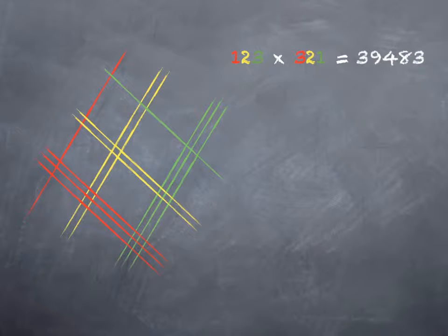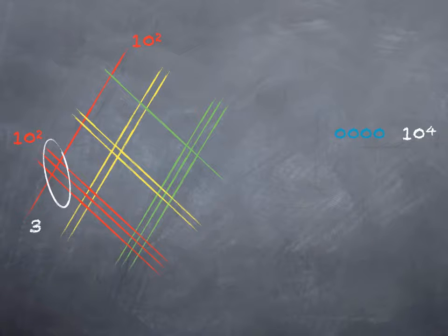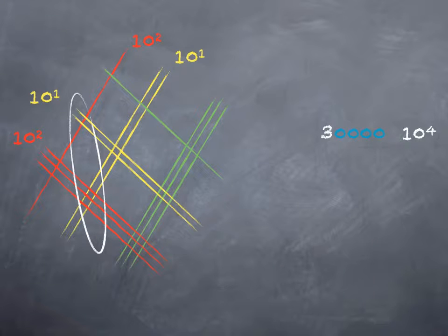If we want to simplify things a little bit for ourselves, we can take a look ahead of time at where our intersections are going to leave us, and we can write out some placeholder zeros. For example, these are hundreds times hundreds, or ten-squared times ten-squared. That multiplication is going to leave me with four trailing zeros, because ten-squared times ten-squared gives me ten to the fourth. So that three I get when I count up the intersection tells me I really have three ten-thousands. In the next space over, now I have ten-squared intersecting with just tens. So again, that's going to give me three zeros, because ten-squared times ten to the first is ten to the third.